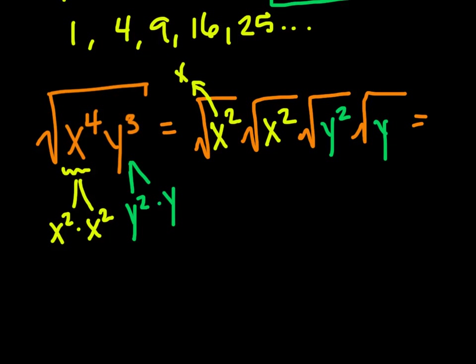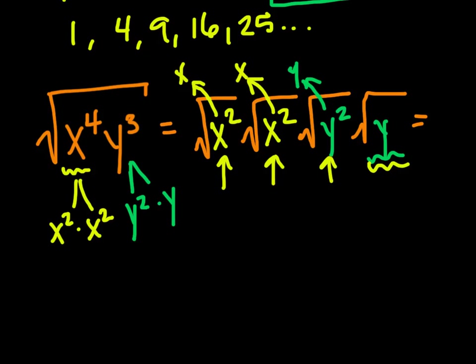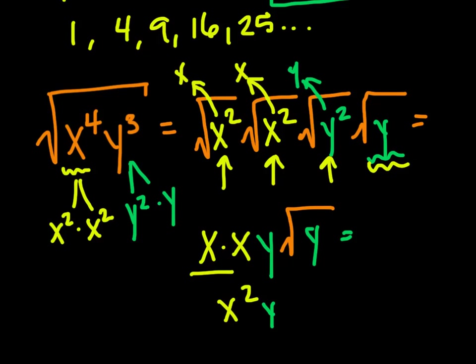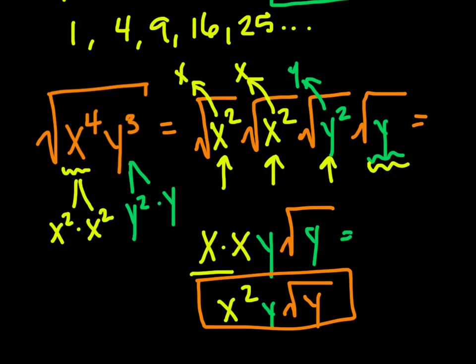Square root of x squared equals x. Square root of x squared equals x. Square root of y squared equals y, and we can't take the square root of y — there's no other y to pair with it. I used the example of a dance: if we have 60 girls and 61 boys, every girl pairs with a boy except for the very last one. We still have a wallflower hanging out on the wall. So our answer is x times x times y times the square root of y, which equals x squared y times the square root of y.